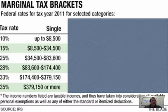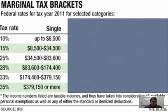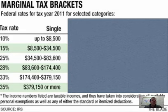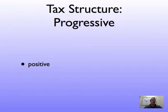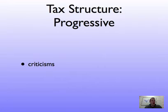Now, this is from 2011, but it hasn't changed dramatically. Somebody who makes less than $8,500 would pay a tax rate of 10% of their income. Somebody who makes between $83,600 and $174,400 would pay 28% of their income. You can see how the tax rate increases as somebody's salary increases. One of the positives is that it puts more of the tax burden on those who can afford to pay. One of the common criticisms is that progressive tax structures are more complex — they require more manpower and hours to collect because they are so much more complicated.